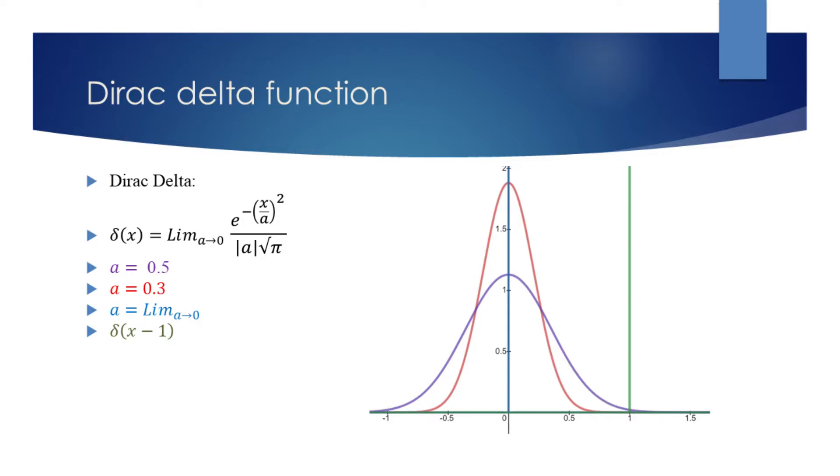Let's have a look at what happens as it approaches 0. The purple plot has a equals 0.5, we can see that it's similar to the bell curve. The red plot has a smaller value of a, 0.3. We see that it is taller and narrower than the purple plot.